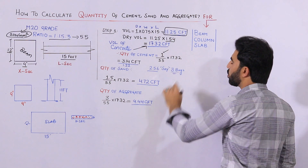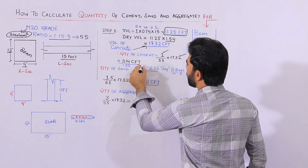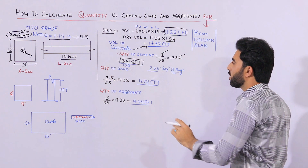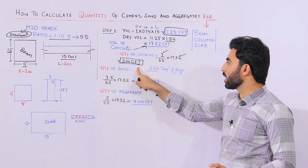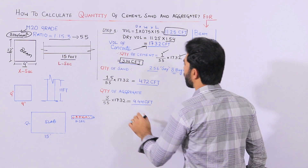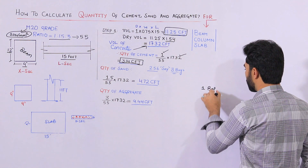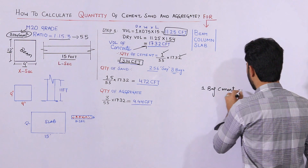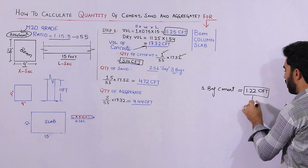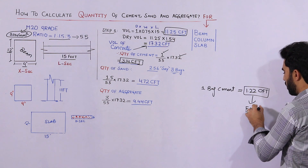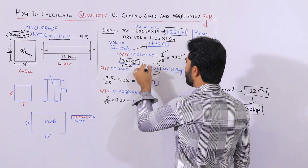Quantity of cement equals 1 part divided by total ratio 5.5, multiplied by the dry volume of 17.32. When you do the calculation, we require 3.14 cubic feet. Now let me convert to cement bags — one bag of cement equals 1.22 cubic feet and is equal to 50 kg. So divide 3.14 by 1.22, and we require 2.56 bags, so approximately 3 bags of cement.